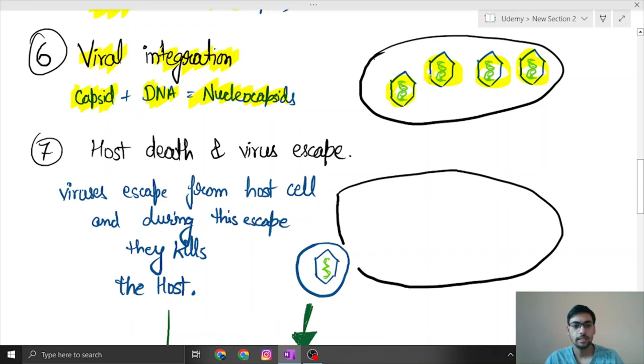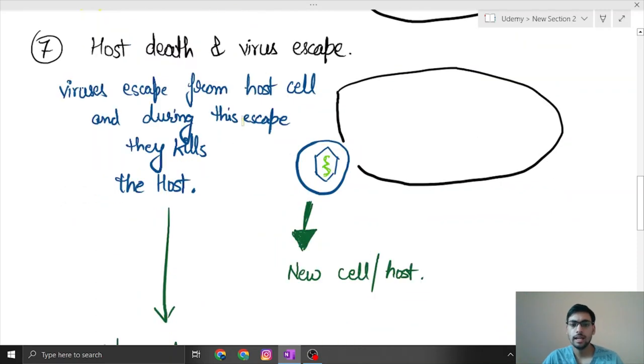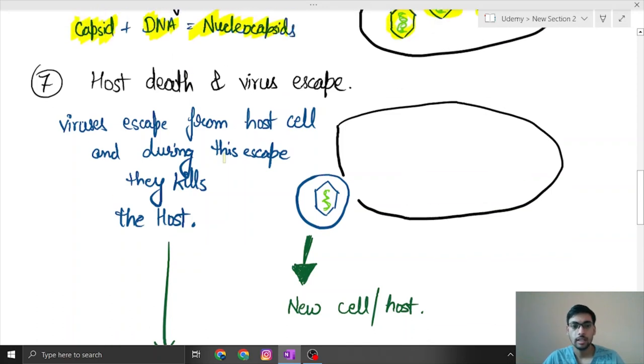After this whole DNA is formed, what will virus do is as its number will increase it will lead to the bursting of the cell. Sometimes it bursts the cell which leads to killing. It kills the host cell.